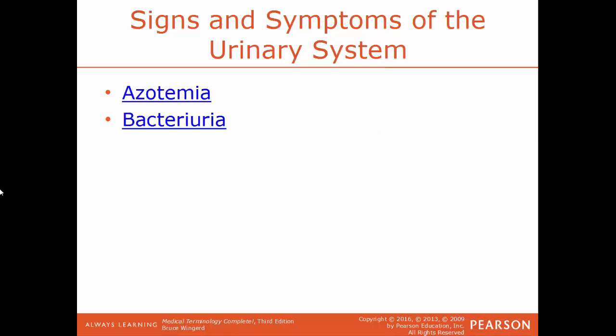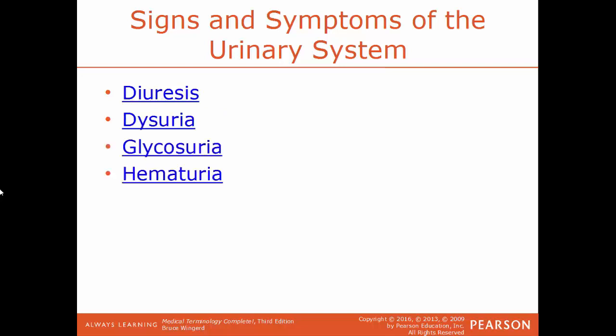Azotemia is having an abnormally high level of urea or other nitrogen-containing compounds in the blood, such as urea or creatinine. Bacteriuria is the presence of bacteria in the urine. Diuresis is an excessive amount of urine being produced. Dysuria is a condition where you have painful urination. Glycosuria is a condition where there are high levels of sugar found in urine. Hematuria is the presence of blood within urine. Ketonuria is the presence of acetones or ketone bodies within urine.